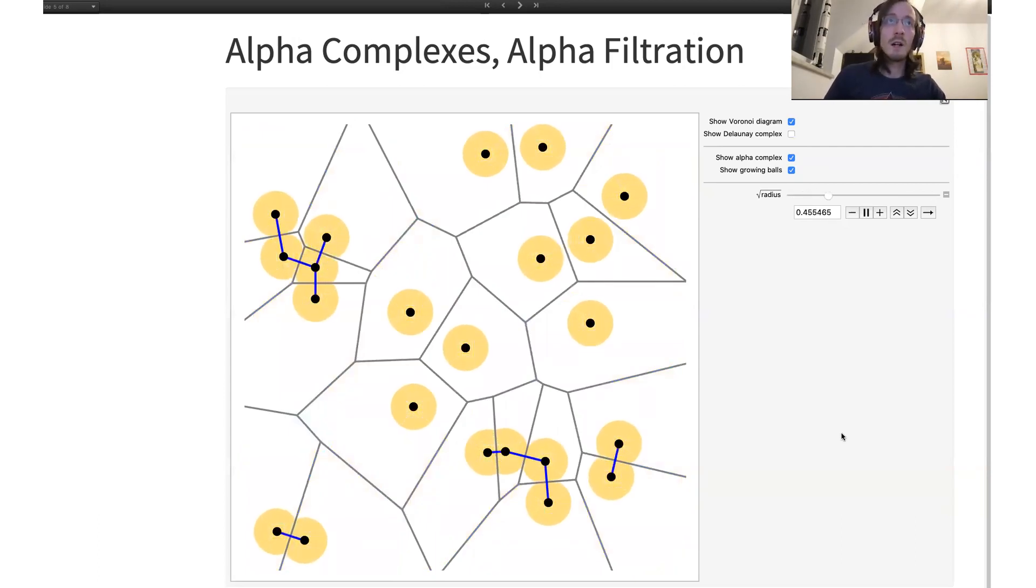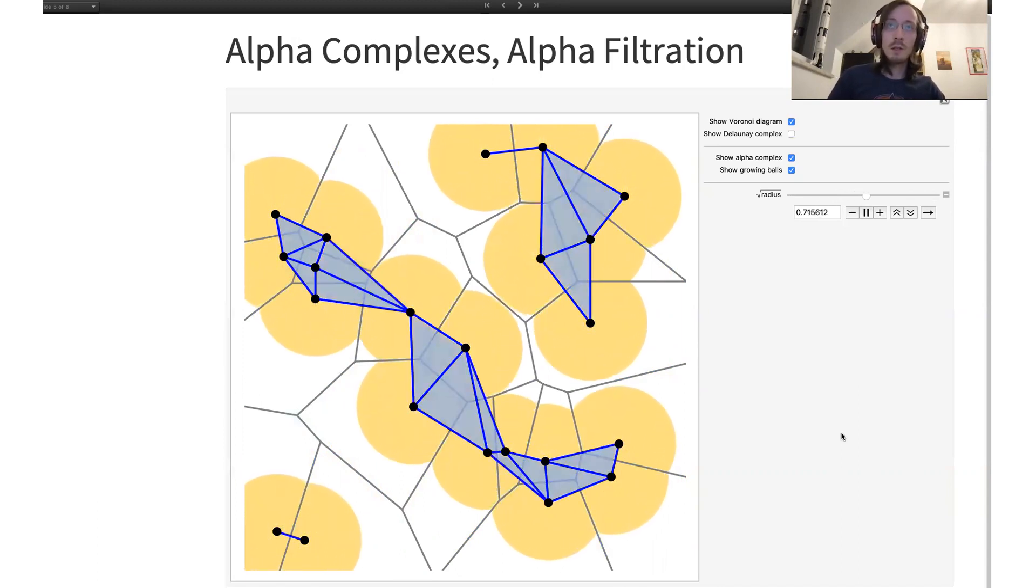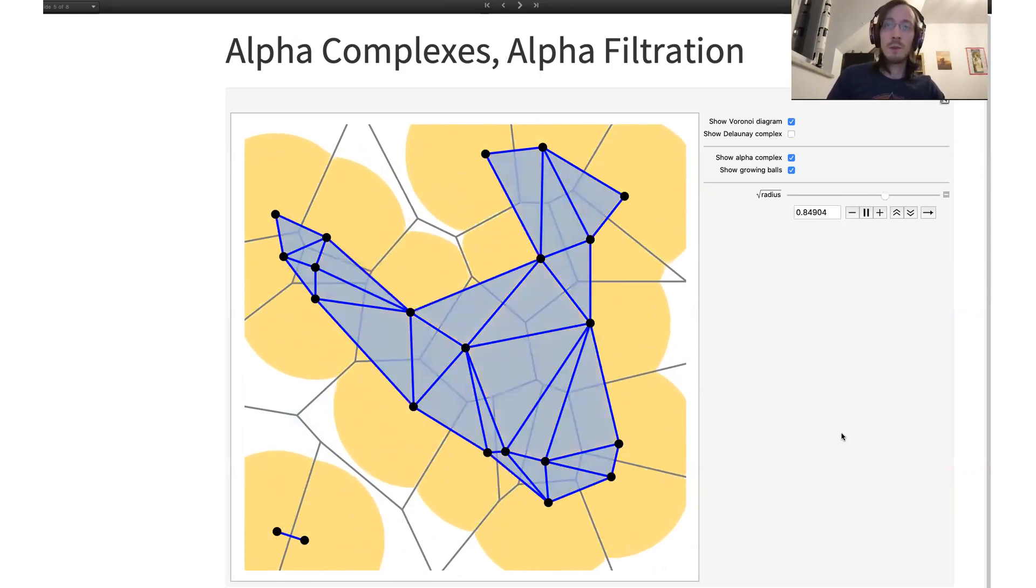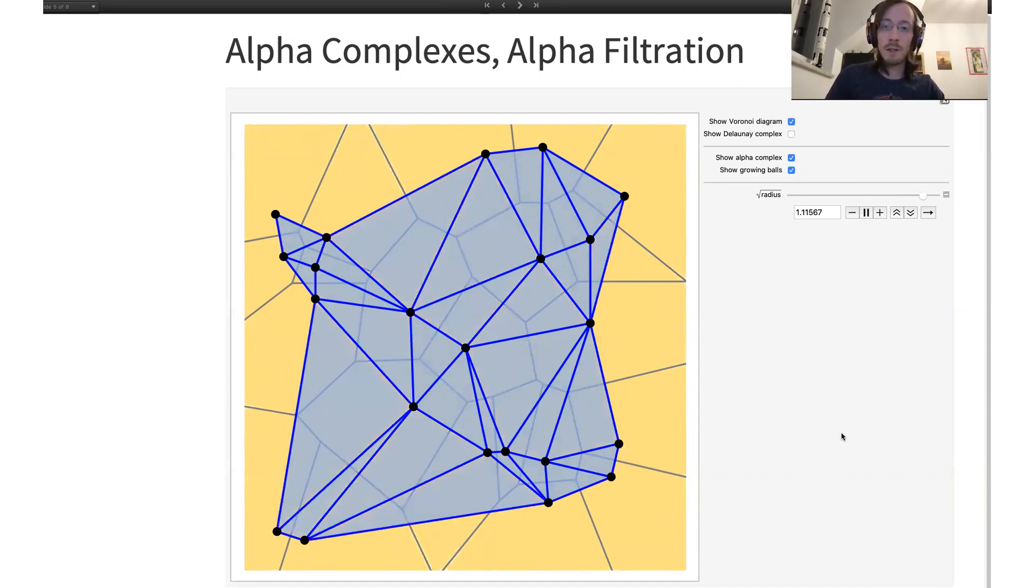And this is great, because the alpha complexes are finite objects easily representable in the computer, and so you can work with these and perform this analysis algorithmically.